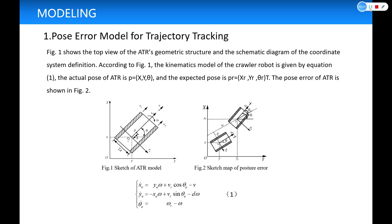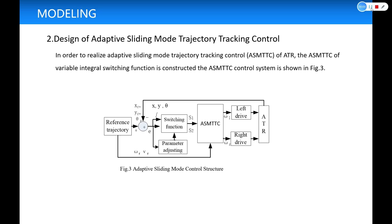The actual pose of ATR is P equals X, Y, Theta, and the expected pose is PR equals XR, YR, Theta T. The pose error of ATR is shown in Figure 2. Design of adaptive sliding mode trajectory tracking control: In order to realize the adaptive sliding mode trajectory tracking control of ATR, the ASMTTC of variable integral switching function is constructed. The ASMTTC control system is shown in Figure 3.